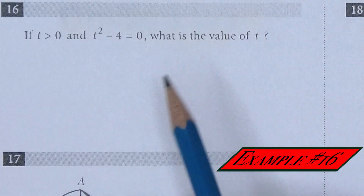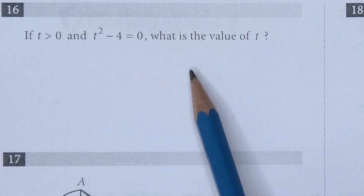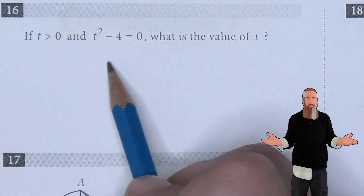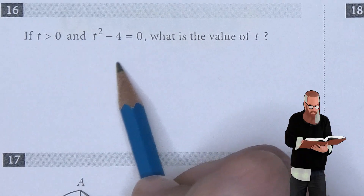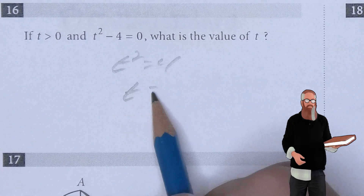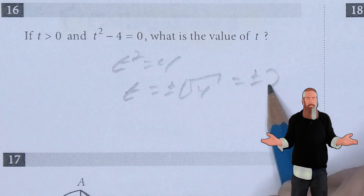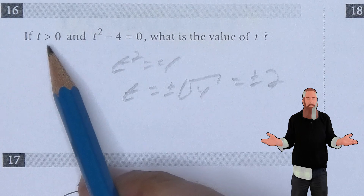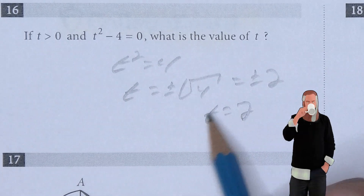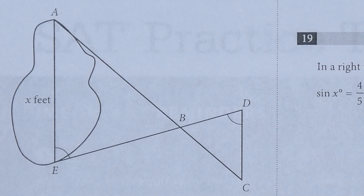If T is greater than 0 and T squared minus 4 equals 0, what is the value of T? Solving: T squared equals 4, so T equals plus or minus the square root of 4, which is plus or minus 2. Since T must be greater than 0, the negative 2 is eliminated, leaving T equals 2.